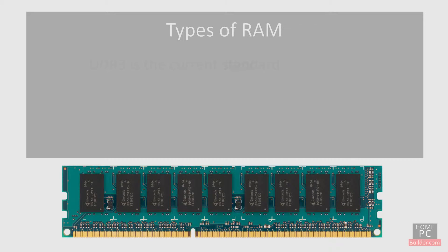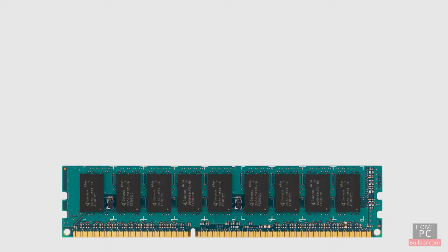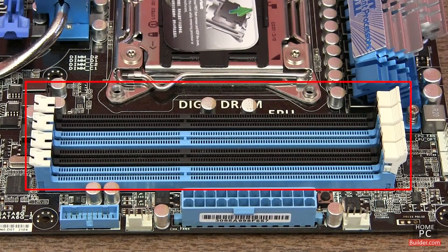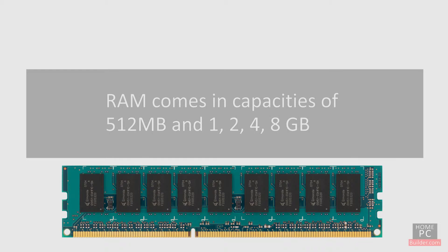The current standard for RAM is called DDR3. DDR3 is able to run at higher speeds and therefore higher bandwidths, compared to the previous standard, DDR2. Memory comes in the form of a stick that attaches to the computer's motherboard through a memory slot. The memory stick is actually made up of several individual memory chips that, when added up, combine to create the storage capacity of the memory stick. Memory sticks come in capacities of 512MB and 1, 2, 4, or 8GB.